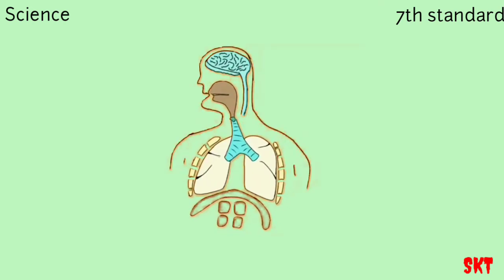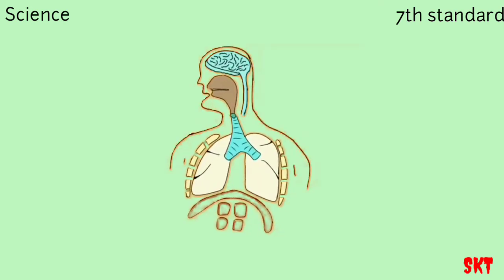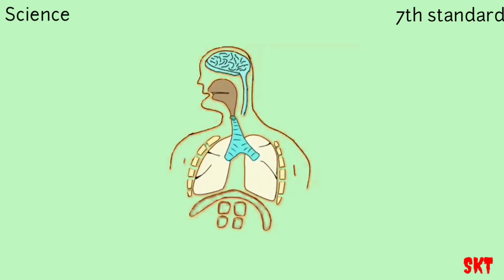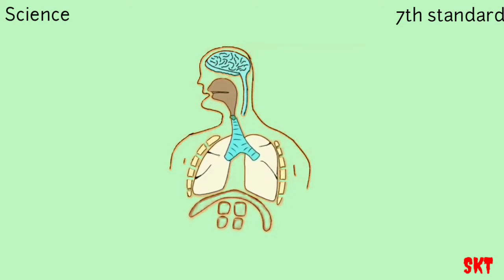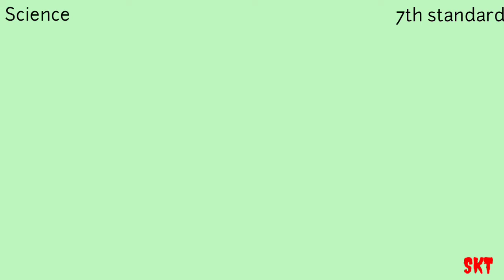In the previous video we covered the chapter on respiration and we are moving on to the next chapter in this video. If you haven't watched that one, please watch that first. The main thing in respiration was taking in oxygen and giving out carbon dioxide. So in this chapter we are going to study how oxygen and carbon dioxide circulate in our body.